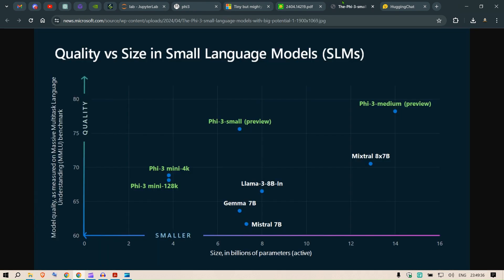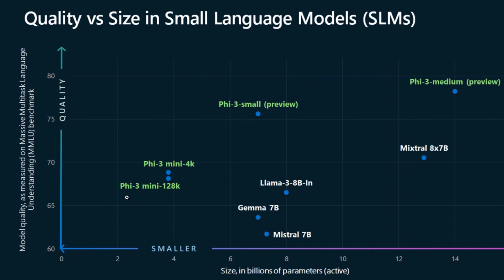Looking at this chart, the x-axis shows size in billions of parameters and the y-axis shows quality. On the smaller end, Phi-3 Mini with 4K and 128K context has very good performance — it even outperforms Llama 3 8B, Gemma 7B, and Mistral 7B. Phi-3 Small at 7 billion parameters also outperforms those three models, and on the higher end Phi-3 Medium outperforms Mixtral 8x7B.